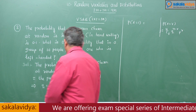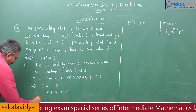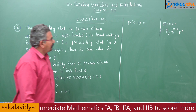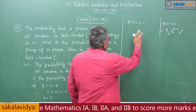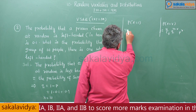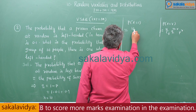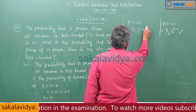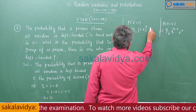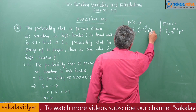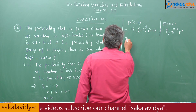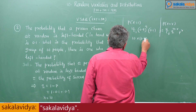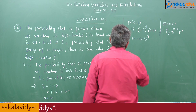Here n is equal to 10. So P(X=1) means 10C1 times 0.9 to the power 9 times 0.1. And 10C1 is 10, so the answer is 10 times 0.9 to the power 9 times 0.1.